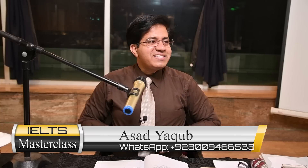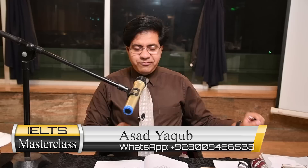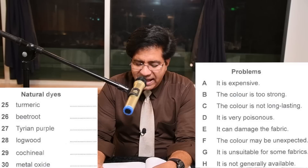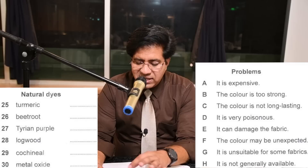Okay guys, Section 3 — we've got another matching type of question here, questions 25 to 30. The same type: what problem is identified with each of the following natural dyes? The questions are natural dyes and the problems are given in the box.